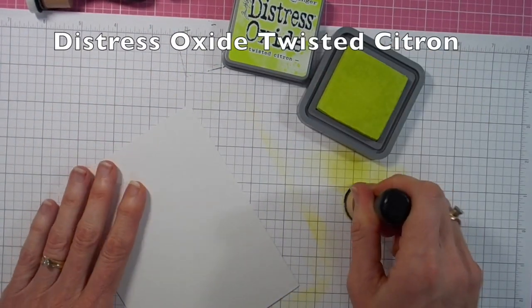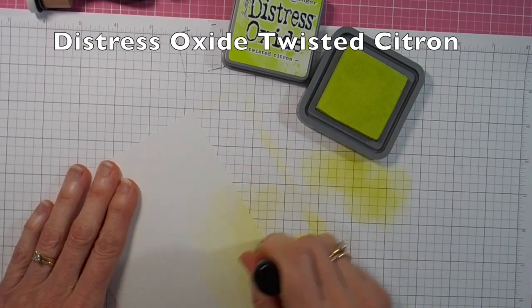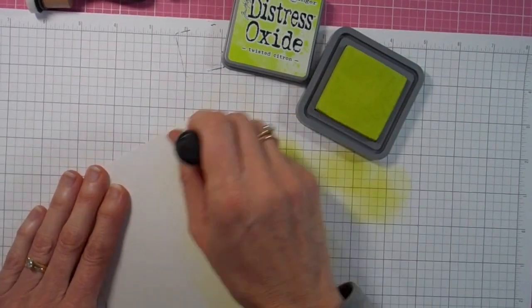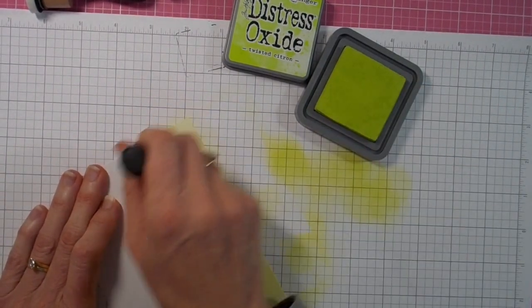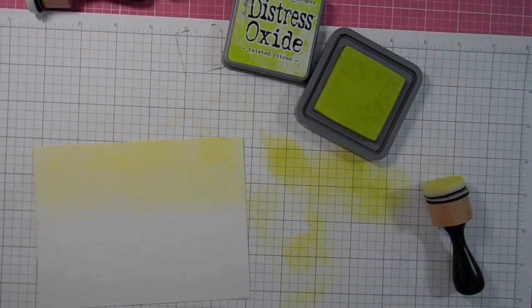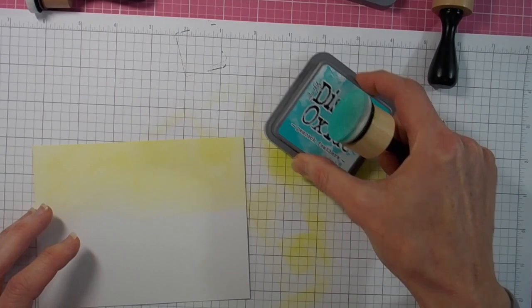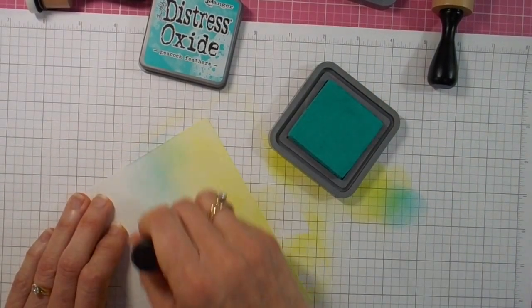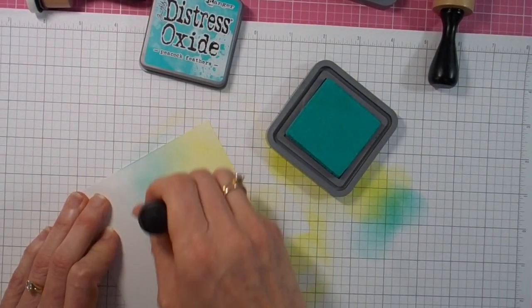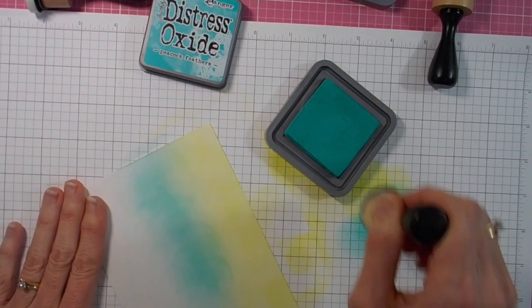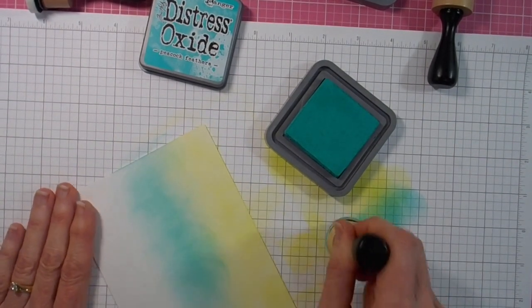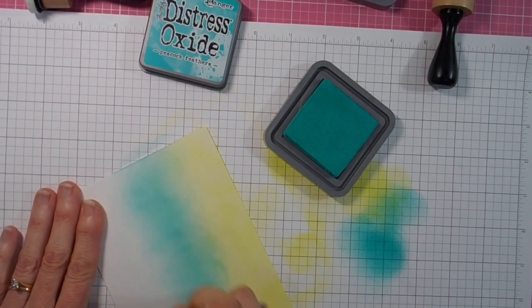Now that all my Copic coloring is done, it's time to move on to the ink blended background. And I'm using my gorgeous new Distress Oxide inks, the brighter colors that have recently been released, and you'll see all the colors up above there with their lids. So I've got Twisted Citron and then Peacock Feathers and lastly I'll be using Salty Ocean.